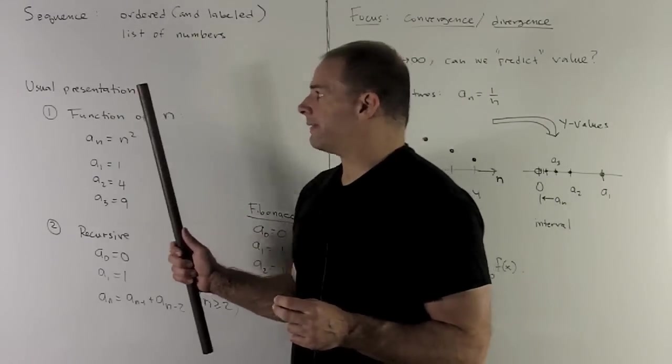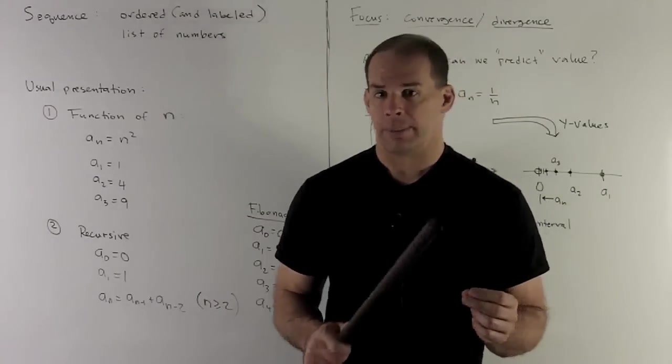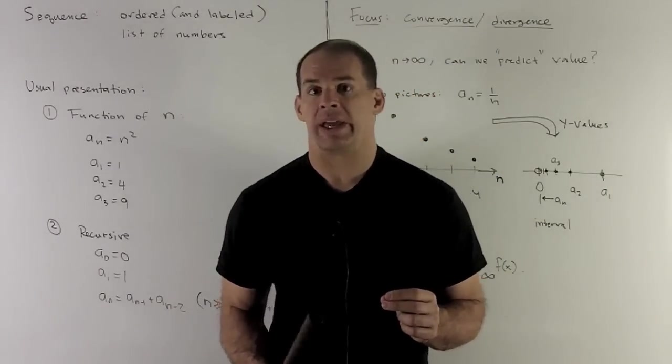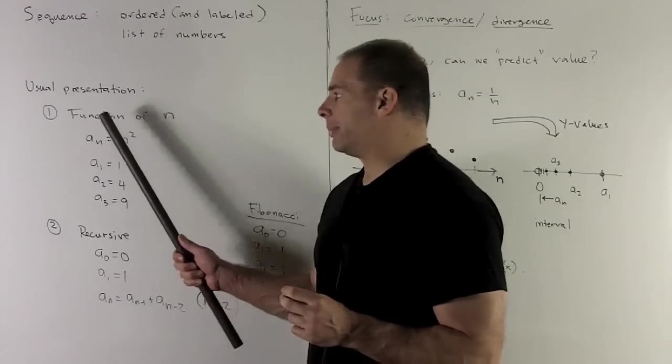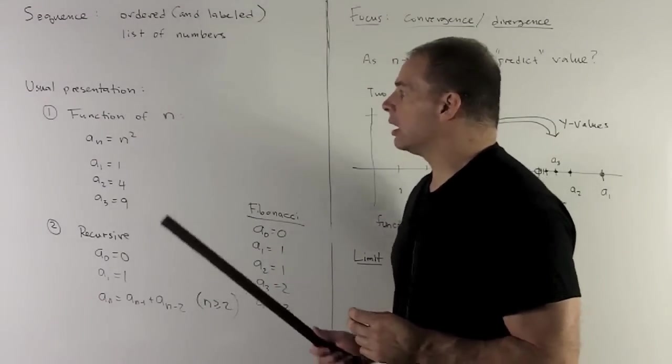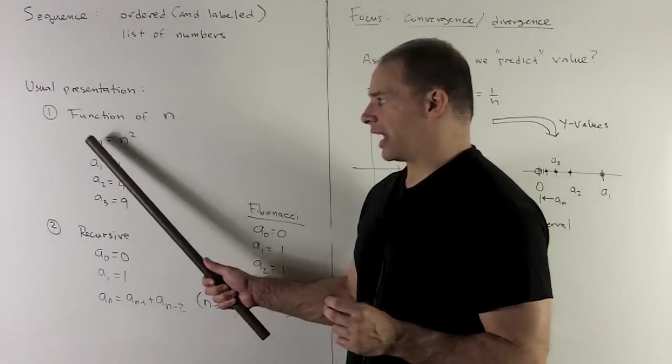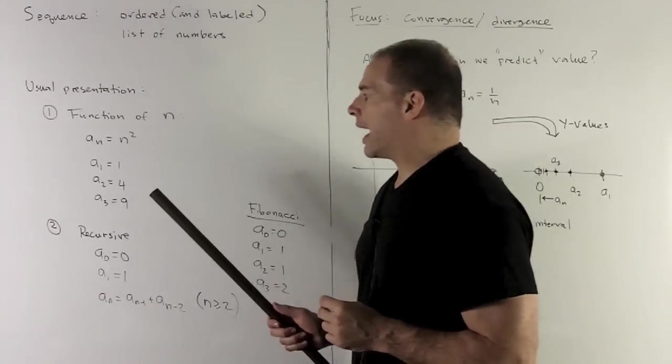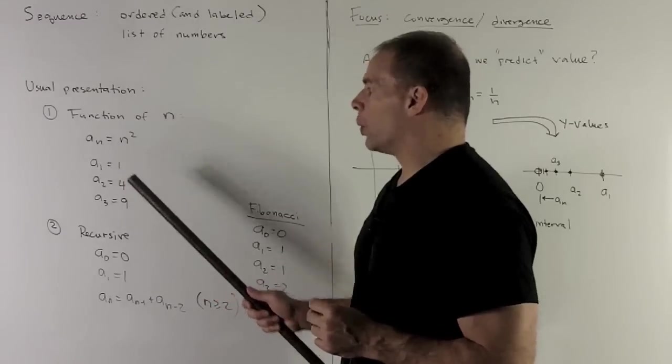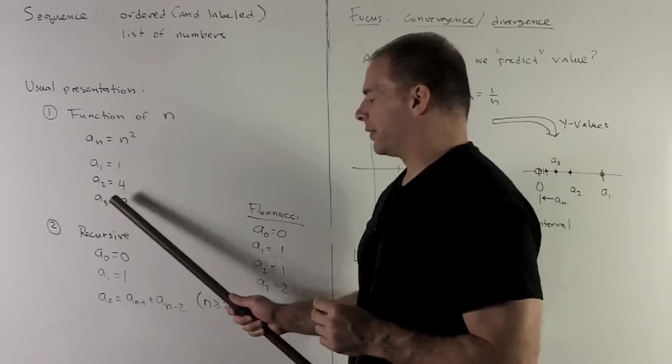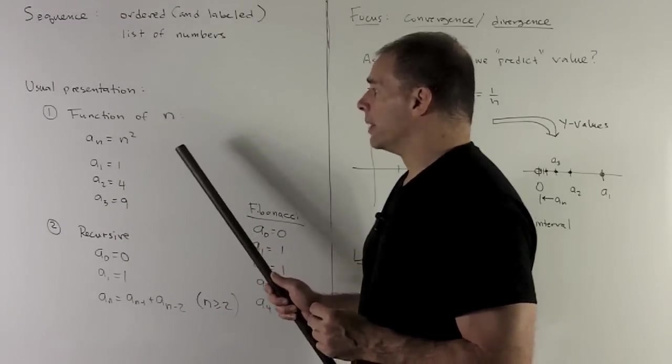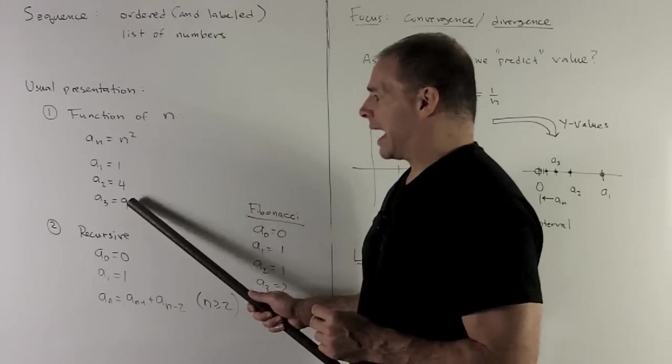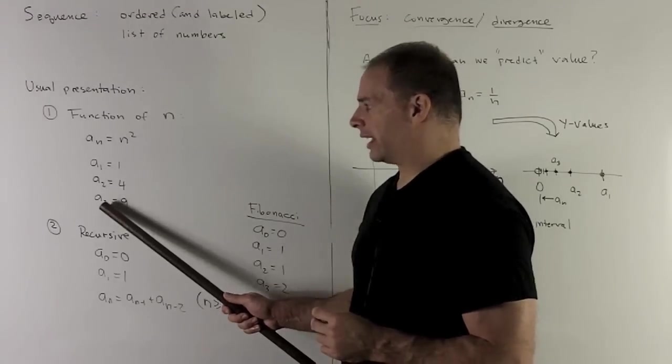Now, when we define sequences, this can be any list of numbers, but usually we're going to find them defined in the following two ways. One way will be as a function of n. So here, n will be an integer, and I just say a sub n equals n squared, for example. And then the way I read this off is a1 is 1, a2 is 4, a3 is 9, and so on. So the n squared is going to tell me how to get the value of the sequence just by looking at the index.